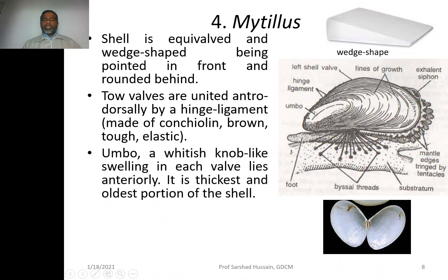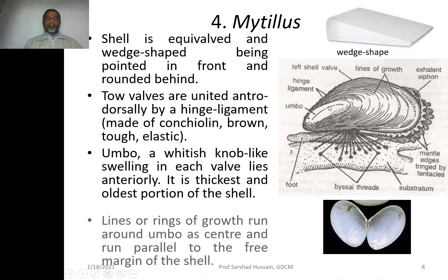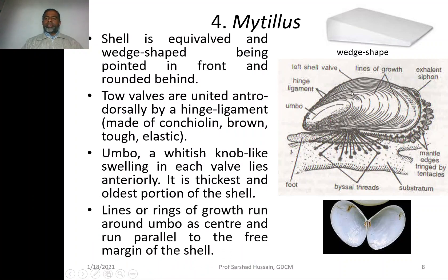The umbo is a whitish knob-like swelling in each valve, lying anteriorly. It is the thickest and oldest portion of the shell — shell formation started from here and later grew outward. Lines of growth or rings of growth run around the umbo, parallel to one another.